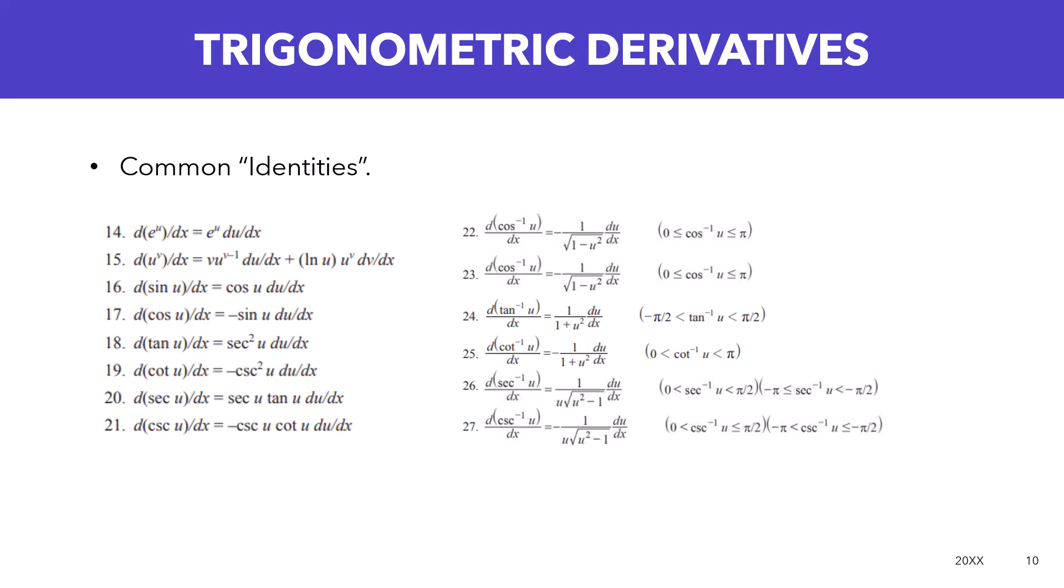These are common trig derivative identities or just different derivative identities that we find in mathematics. It's not always important to understand exactly why some of these equal the other, especially for the FE exam. It's just good that this is also in the reference manual, but you also have them memorized so that you know what they are.